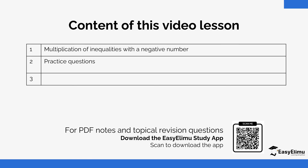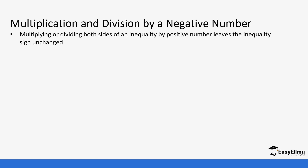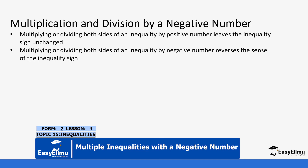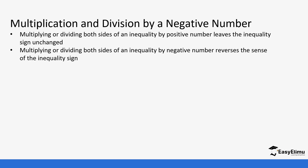What effect does this have on the sign of the inequality? When you are multiplying or dividing by a negative number, it changes the sign. But if you are multiplying or dividing by a positive number, as we did in the previous video, we didn't change any sign. But if we do so with a negative number, then the sign is going to change — if it was greater than, it becomes less than; if it was less than, it becomes greater than.